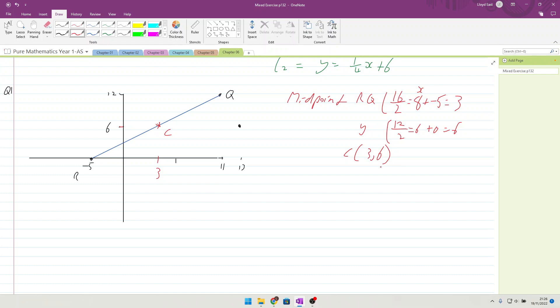Find the radius of the circle. So now we need to do the length of RC, so RC is equal to the square root, so from -5 to 3 is 8, 8 squared plus 0 to 6 is 6 squared. The square root of 8 squared plus 6 squared is 10.